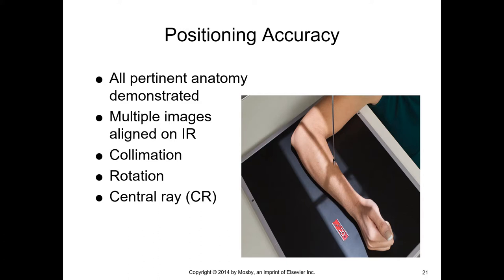What do you need to think about as a radiographer? All pertinent anatomy should be demonstrated. In general, we want to avoid having multiple images aligned on a single image receptor. This causes errors in field uniformity, and if we're working with digital radiography, this can confuse the processing algorithms and cause images to appear under- or overexposed.